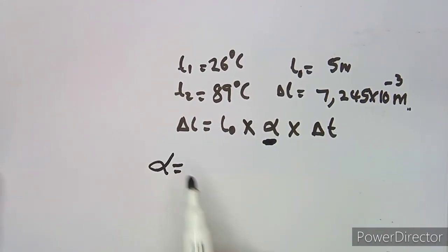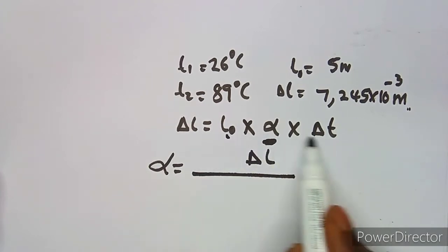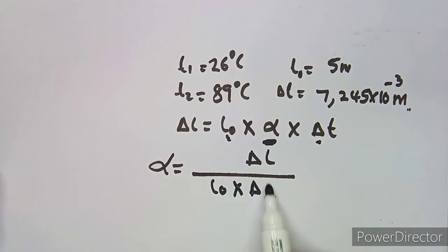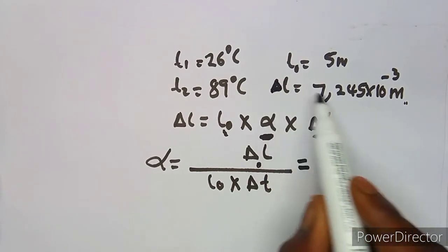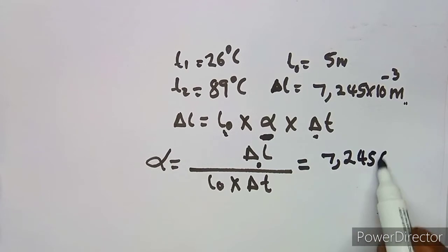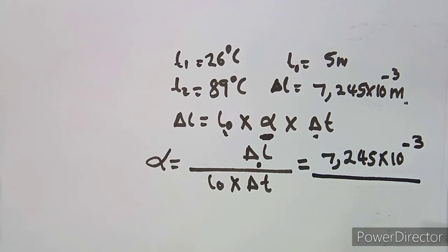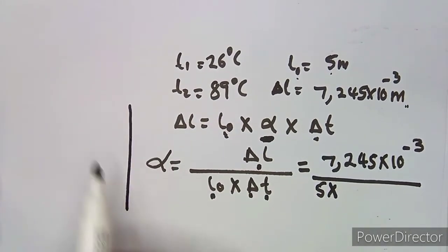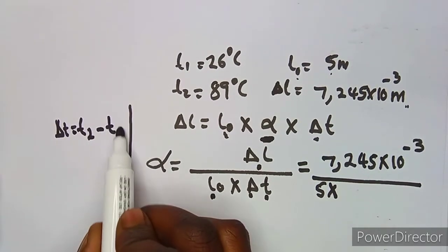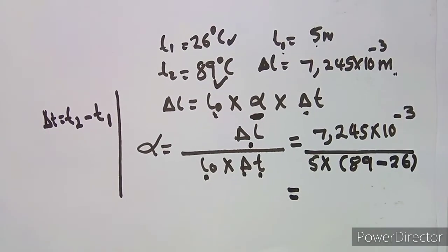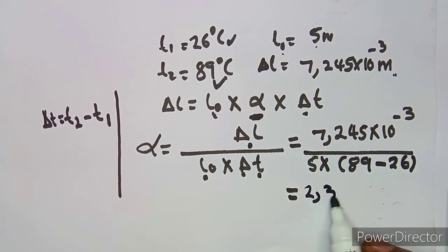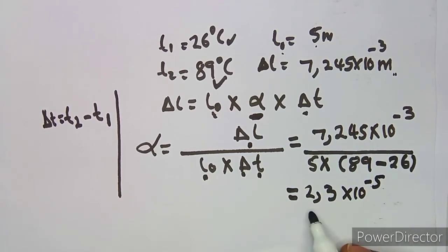We can find the linear coefficient of expansion α by rearranging: α = ΔL ÷ (L₀ × ΔT). Substituting the values: α = (7.245 × 10⁻³) ÷ (5 × (89 − 26)). The change in temperature is T2 minus T1, which is 89 minus 26. Calculating this gives α = 2.3 × 10⁻⁵.